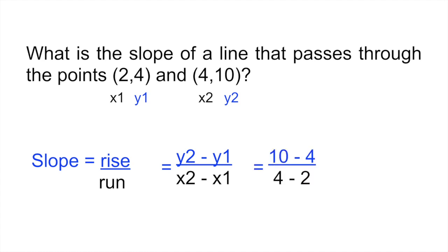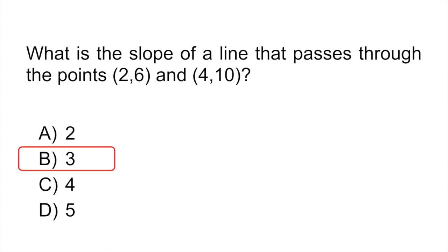And then on the top, you would have 10 minus 4. And then in the bottom, you would have 4 minus 2. That gives you 6 divided by 2. And your slope would be 3, which is letter B.